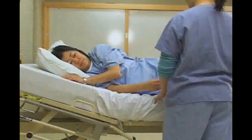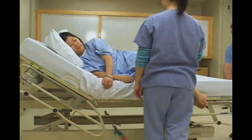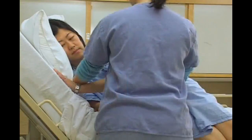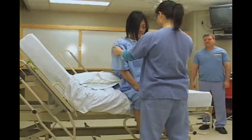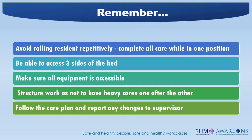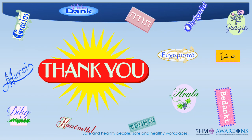In summary, this procedure should be used to assist a patient from lying to sitting if a mechanical lift is not appropriate, with one or two trained caregivers required. Raise the head of the bed as much as possible and use a side-to-side weight shift. Ask the patient to assist as much as possible. Remember: avoid rolling the resident repetitively, complete all care while in one position, access three sides of the bed, structure your work so you don't have heavy cares one after the other, and make sure all equipment is accessible. Follow the care plan and report any changes to your supervisor. This concludes the Safe Handling Mobility video on bed mobility and associated equipment. Please click below to continue to a short quiz to receive your certificate.